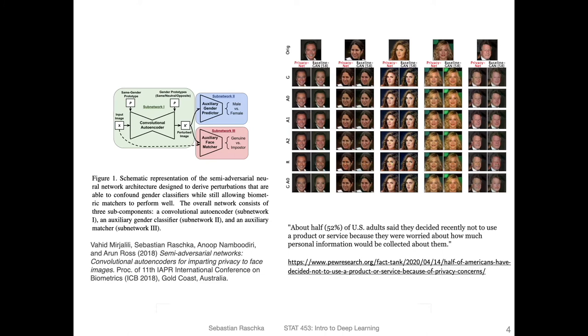Or here's an application of an autoencoder I worked on a couple of years ago. We had a convolutional autoencoder here that we implemented for privacy enhancements. So here, we had the goal to remove gender information while retaining the matching accuracy of face matches. Face matches are often used for security purposes, like passports scanners and so forth.